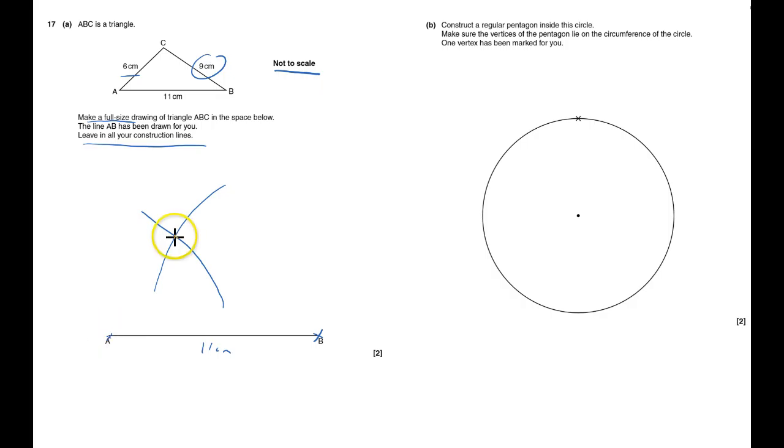It goes from the point A up to the cross, and then it goes from the cross back down to B. Oh, that should have gone to B. Right.